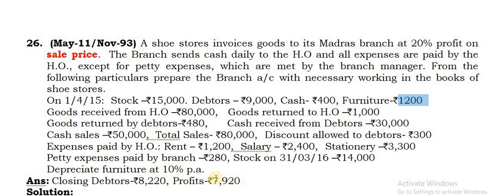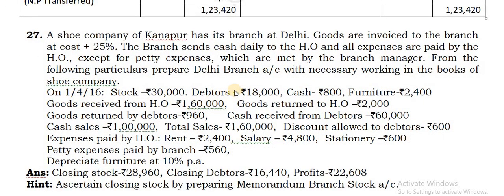So this is your answer for Q26 - try it by yourself. We will see the 27th question next. This also will be your problem but it is simple. Almost double the values of the previous one are given in this problem. It is cost plus 25%. So the change is that in the previous problem it was 20% straight on sale price or invoice price, but now it is cost plus 25%, so you calculate the load as 25 by 125.